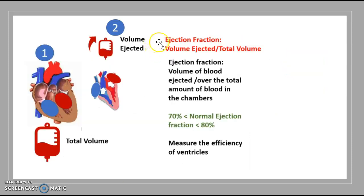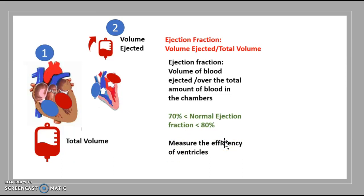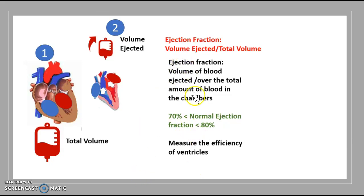There is something called the ejection fraction — the volume ejected from the ventricles divided by the total volume. This basically measures the efficiency of the ventricles. A normal ejection fraction is within 70% to 80%. Anything below or above that range is abnormal.